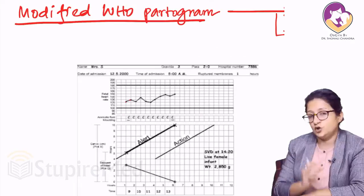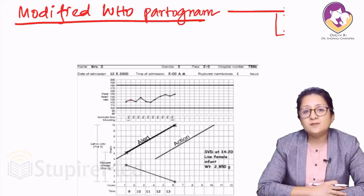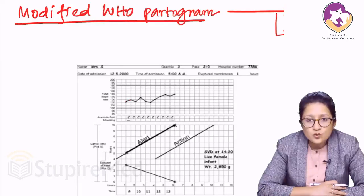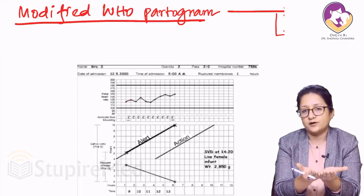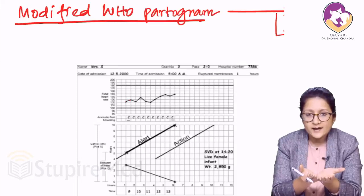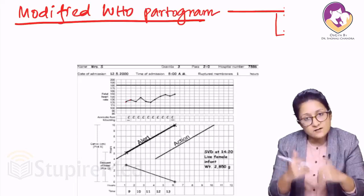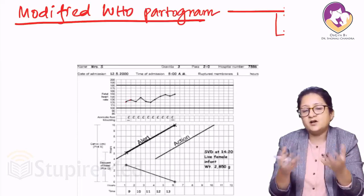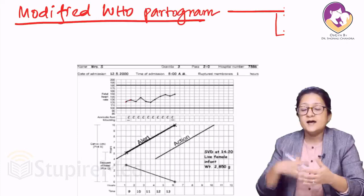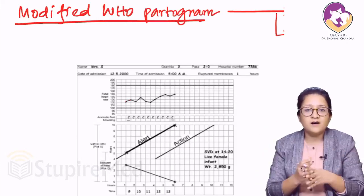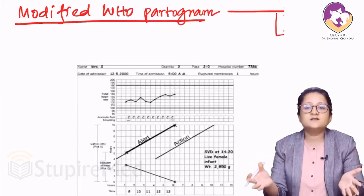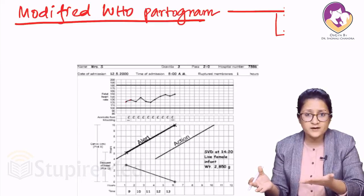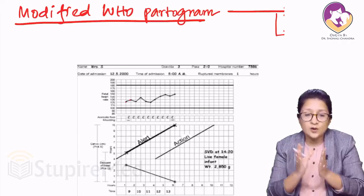The partogram is a labor room utility tool that can be read and used by everybody, so it is simplistic. By looking at it, you can get all information about the patient — how she is progressing in labor, how she is doing herself, and how the baby is doing. For example, if my shift ends and the woman hasn't delivered, my reliever can look at the partogram and immediately understand what has happened over the past 12 hours.